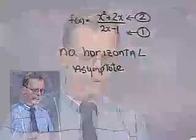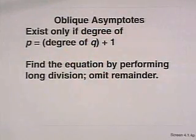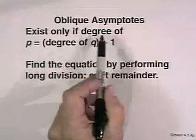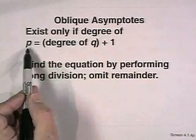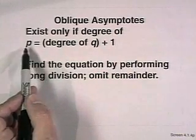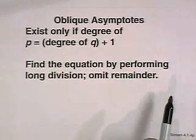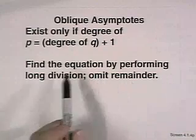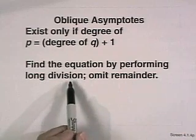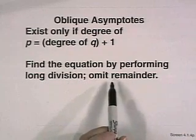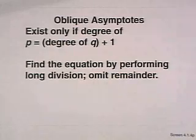We can also have a third kind of asymptote called an oblique asymptote. An oblique asymptote exists only if the degree of p — that's the numerator — is equal to 1 more than the degree of q. We can find the equation by performing long division and omitting the remainder. Let's take a look at an example to see how we can make that work.